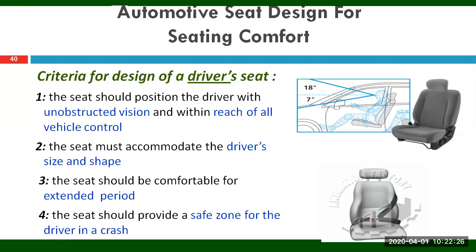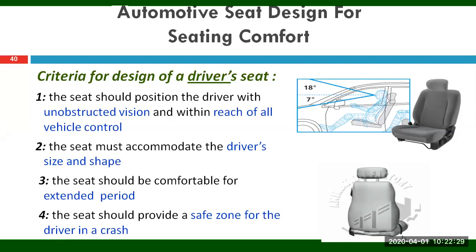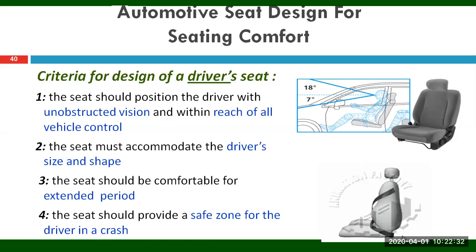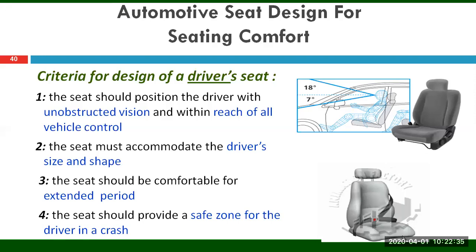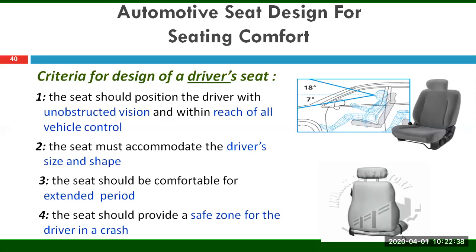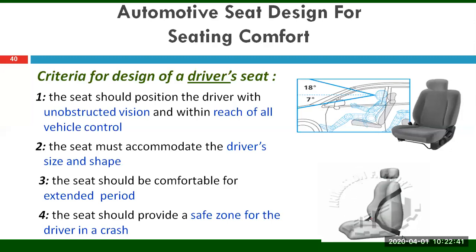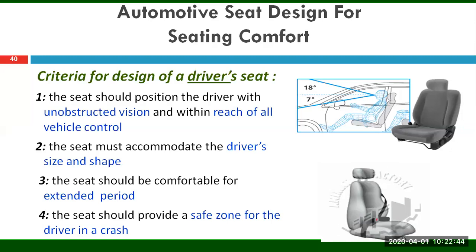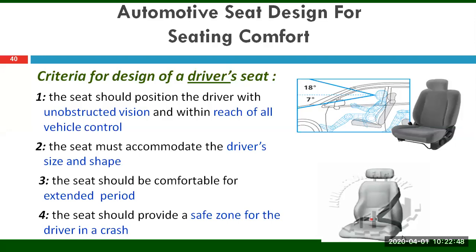It can be a three-point safety belt that you see on this particular seat, which is revolving. Apart from that, in case there are going to be some protrusions either from the rear side or from the front, you're going to provide a safety zone on your seat which is going to protect the occupant.